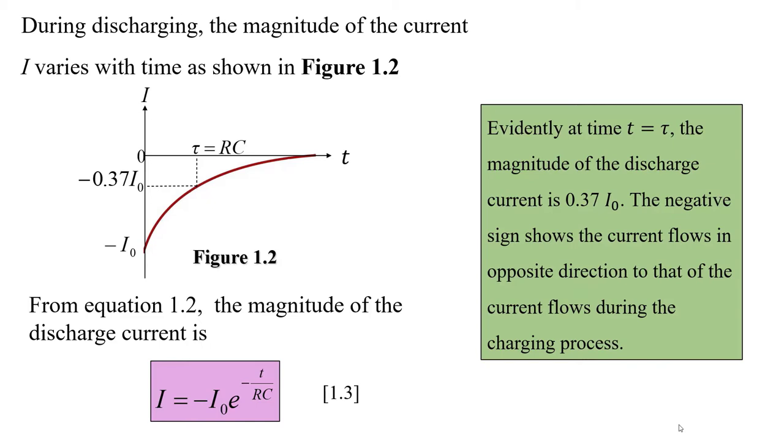Evidently, at time T equals to tau, the magnitude of the discharge current is 0.37 I not. The negative sign shows the current flows in opposite direction to that of the current flow during the charging process.